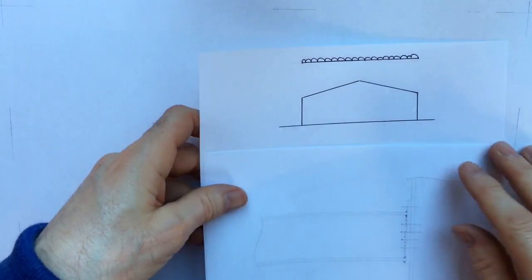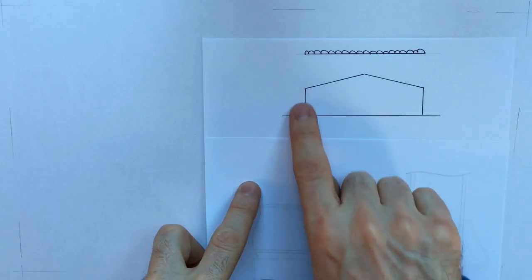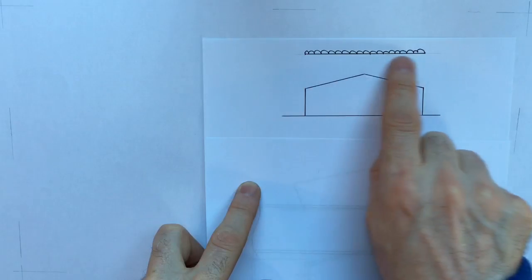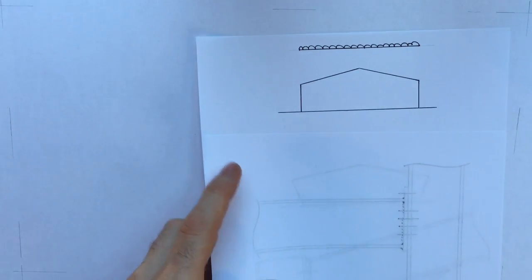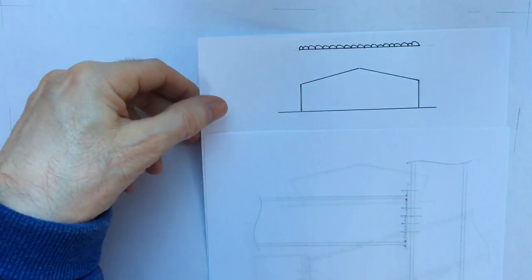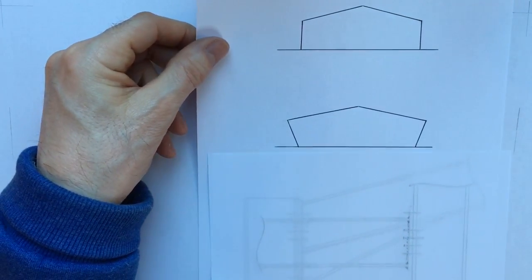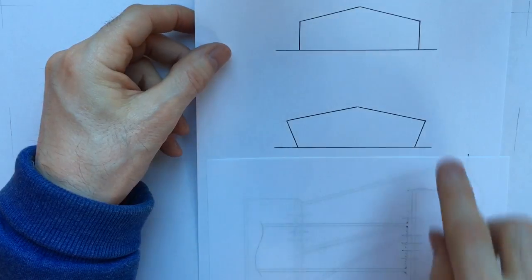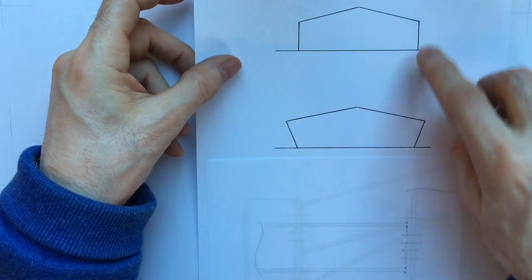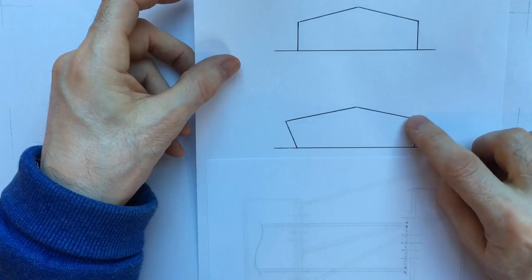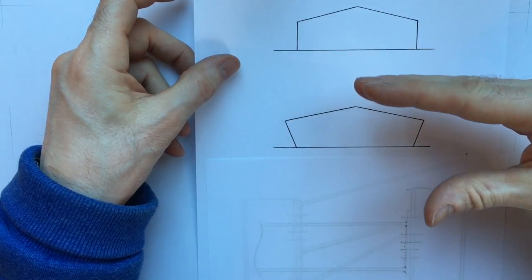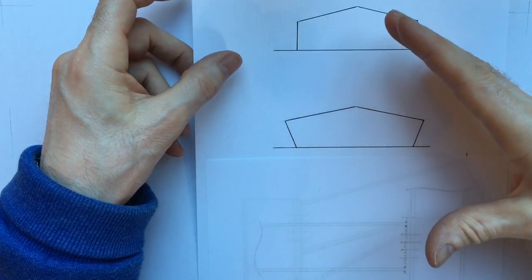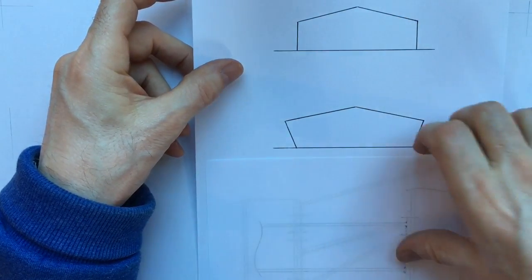Another example where this could occur is a typical portal frame shed under the worst case loading of dead and live load acting on the roof rafters. When that dead and live load acts, the shed tends to kick out its knees. This joint here tends to close up so there's a bending moment because there's some rotation taking place.